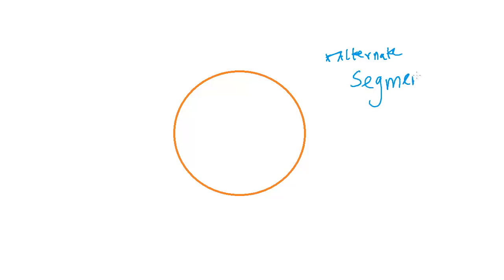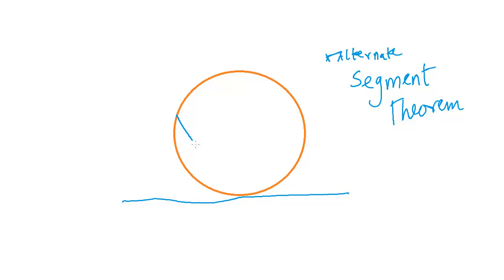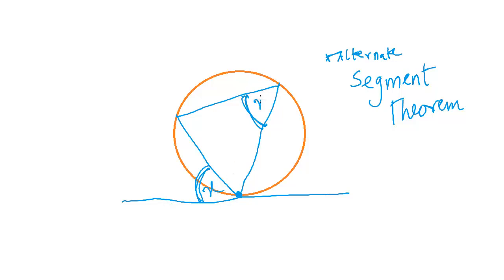The most important proposition regarding tangents is the alternate segment theorem. When a tangent is drawn to a circle and a chord meets that tangent, the angle between the chord and the tangent equals the angle that the chord makes at the circumference in the alternate segment. So if the angle between chord and tangent is x, the angle at the circumference is also x.